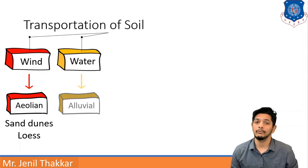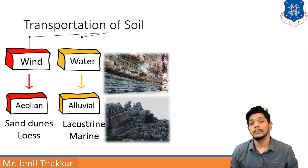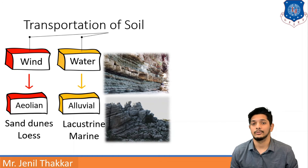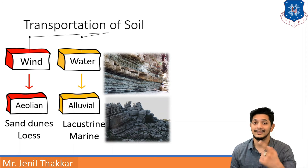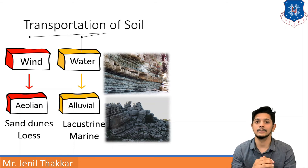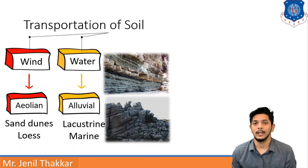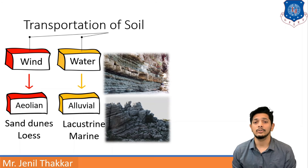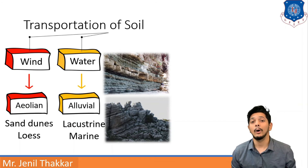If soil is transported by water, that soil type is known as eluvial soil. Examples include lacustrine soil and marine soils. Lacustrine soils, seen in the top picture, show different soil strata — different layers — so lacustrine soils are generally stratified soils. Marine soils can be seen in the bottom picture.